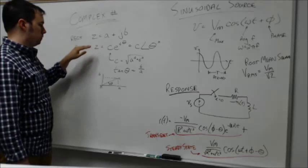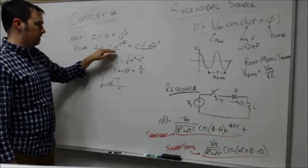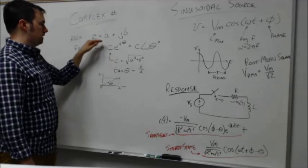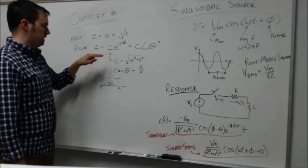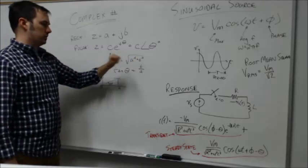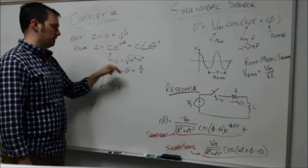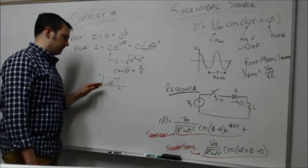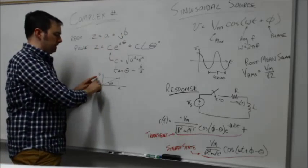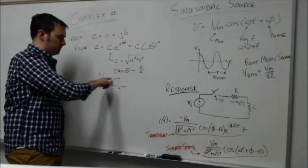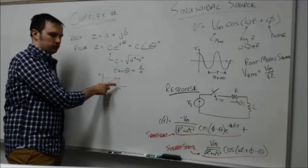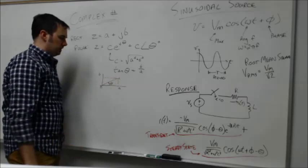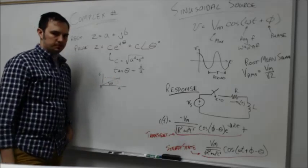Polar form takes this form of Z equals C times exponential to the J times theta. We can transform from the rectangular to the polar coordinate system by giving C the value of the root of a squared plus b squared, and the tangent of this angle theta is going to be equal to b over a. This figure basically shows you how that works out, mapping it out onto a coordinate system. You see that C is simply the magnitude of that vector representation in the rectangular system, and the angle there is where that vector is with respect to the x-axis.